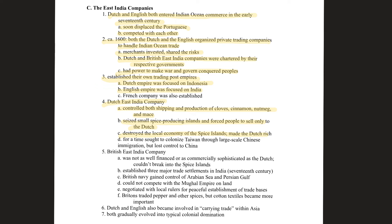The British East India Company was not as well financed or commercially sophisticated as the Dutch, so they couldn't break into the Spice Islands and settled for India instead. They couldn't challenge the Dutch directly, so they had to go to a less immediately desirable but ultimately more profitable area. Eventually, the British Navy gained control of the Arabian Sea and Persian Gulf.